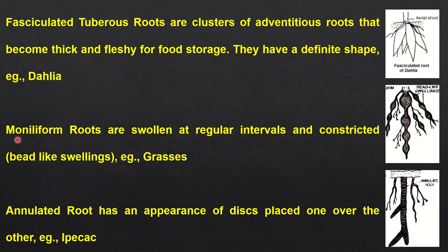Then we come to moniliform roots. Moniliform roots are swollen at irregular intervals and constricted, giving them a bead-like appearance. Just like beads in a necklace appearing at regular intervals — one swollen structure, then an interval, then again swollen, then an interval — they have a beaded structure. This is found in grasses.